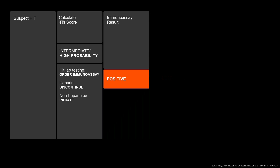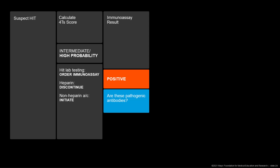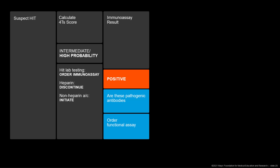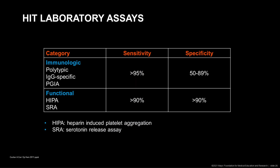A positive immunoassay result suggests the presence of antibodies directed against heparin platelet factor IV complexes. The next step is to ask whether these antibodies are platelet-activating or functional antibodies implicated in the pathogenesis of HIT. Of the available functional assays, the heparin-induced platelet aggregation assay, also known as HIPA, has been around for a long time. However, the current gold standard functional assay is the serotonin release assay, also known as SRA, which is based on either radioactive or non-radioactive methodologies.